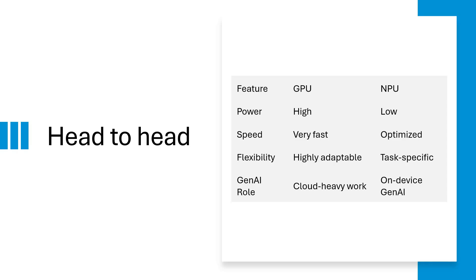GPUs require high power; NPUs are more efficient. In terms of speed, GPUs are very fast; NPUs are optimized. GPUs are highly adaptable, but NPUs are task-specific.